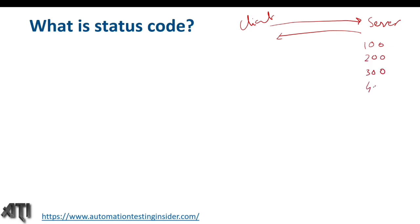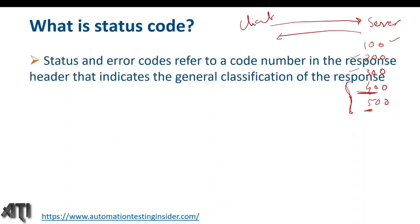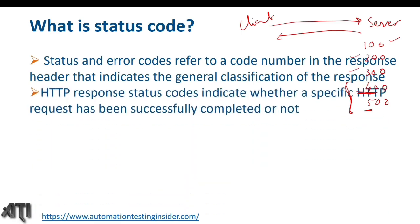We receive response codes in different series: 100 series, 200 series, 300 series, 400 series, and 500 series. Different codes have different meanings — 100 is for 'continue', 200 is for success, 300 is for redirection, 400 is for client-side errors, and 500 is for server-side errors. By definition, status codes refer to code numbers in the response header that indicate the general classification of the response, helping us verify whether we're getting the correct response.